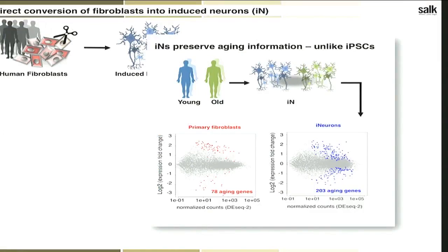Most importantly, when we generate these INs from young and old people's fibroblasts, we see a bunch of genes significantly differentially regulated by age. The fibroblast aging genes and the neuronal aging genes don't really overlap very much. Most of the fibroblast genes get shut off in the process, with fibroblasts showing a more skin-typical aging profile — like wound healing gene categories — while neurons show a more brain-typical aging profile, including synaptic plasticity, long-term potentiation, and calcium homeostasis. These match what people previously observed in aging brain microarray studies.